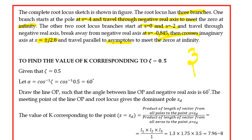To find the value of K corresponding to damping ratio ζ = 0.5: the damping angle α = cos⁻¹(ζ) = cos⁻¹(0.5) = 60 degrees. Draw the line OP such that the angle between OP and the negative real axis is 60 degrees. The intersection of line OP and the root locus gives the dominant pole sd. K equals the product of lengths of vectors from all poles to sd divided by the product of lengths from all zeros to sd.